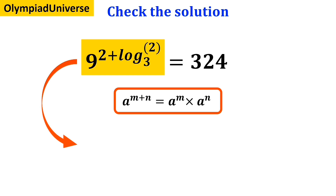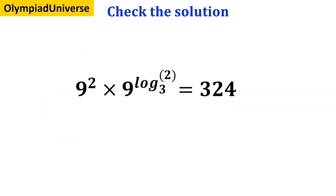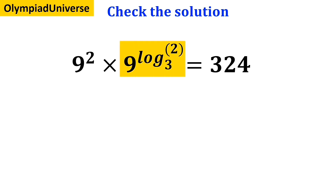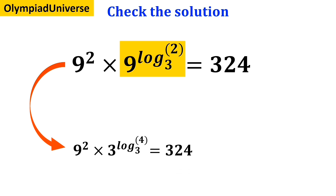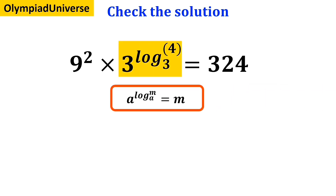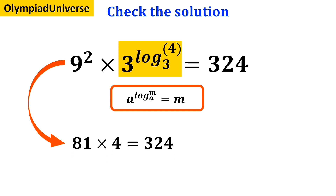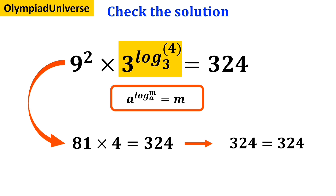So we can rewrite this expression as 9 squared times 9 to the power of log of 2 with base 3, which is equal to 324. We slightly change the highlighted expression and rewrite it as 9 squared times 3 to the power of log of 4 with base 3, which equals 324. According to the rules of logarithm, a to the power of log of m with base a is equal to m. So this expression simplifies to 81 times 4 which is equal to 324, successfully proving that 324 equals 324.